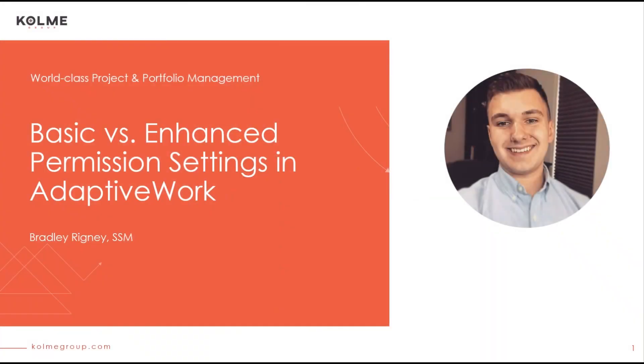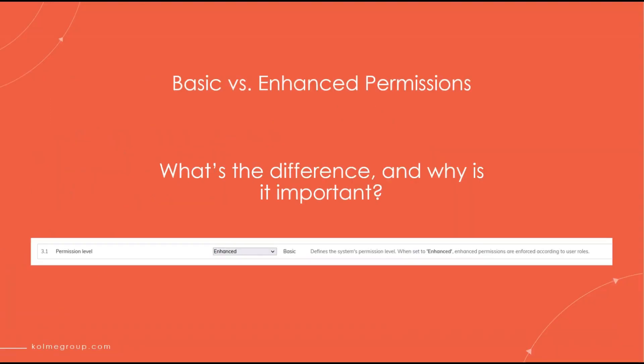Hello and welcome. My name is Bradley Rigney and I'm a consultant here at Kolme Group. Today's topic of discussion is going to be the basic versus enhanced permission setting in Adaptive Work. One of the most important system settings available in Adaptive Work is system setting 3.1, which controls your permission level and how it can affect the way your organization uses Adaptive Work.